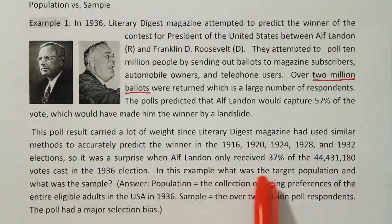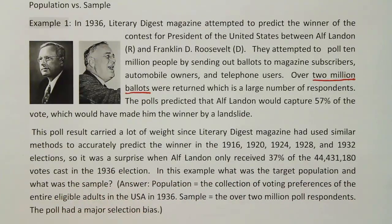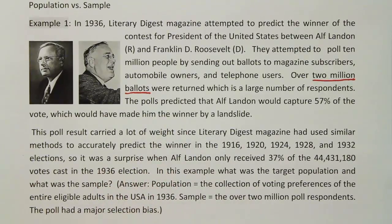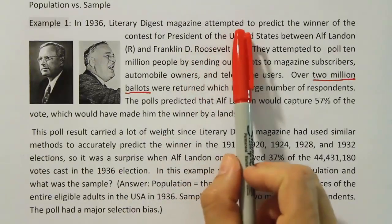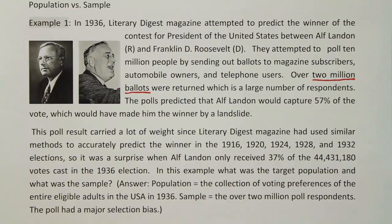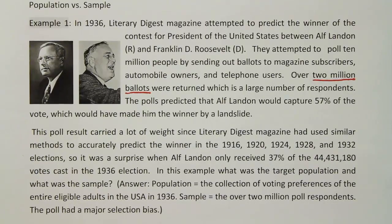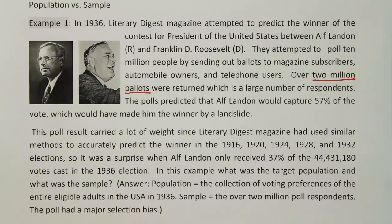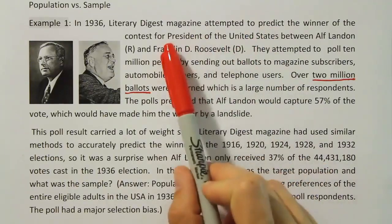In this example, what was the target population and what was the sample? This problem is just dealing with the difference between a population and a sample. Based on this example, what was the target population? Well, in the first line it says they attempted to predict the winner of the contest for president of the United States. So the population was the voting preferences for the entire U.S. population — in 1936, they wanted to know basically how the public was going to vote, specifically the voting preferences for the entire voting age population. That would give them enough to predict the winner of the election.